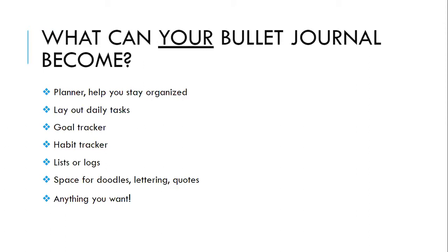What your bullet journal can become: it can be a planner to help you stay organized, daily or monthly. I lay out a month at a time and end up at the end of the year having a yearly planner. It can be a tracker for different things — for goals you have or habits you want to keep track of. You can create lists or logs, make space for art, doodles, quotes, photos, or memories. This can be anything you want, and the list is not even comprehensive.